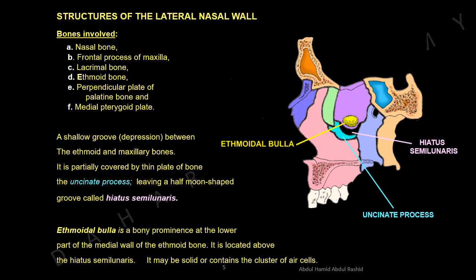Structures of the lateral nasal wall. The lateral nasal wall consists of many structures. The first group is the bones involved. From anterior to posterior: nasal bone, frontal process of the maxilla, lacrimal bone, ethmoid bone, perpendicular plate of the palatine bone, and the medial pterygoid plate.